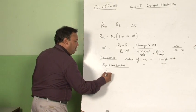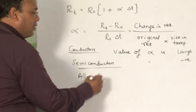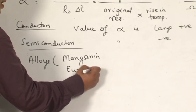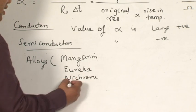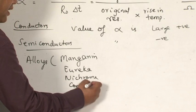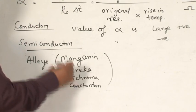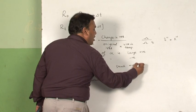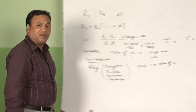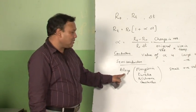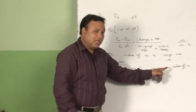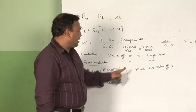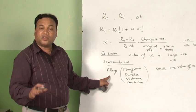The third type consists of special alloys: manganin, eureka, nichrome, and constantin. These four special alloys have a small positive value of alpha. So with a rise in temperature, resistance does increase, but that increase is very, very small — practically almost negligible.